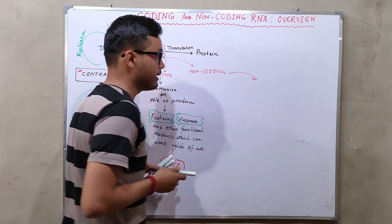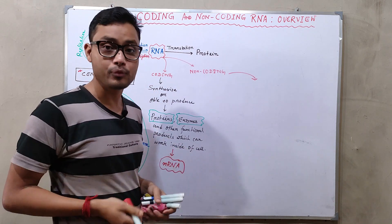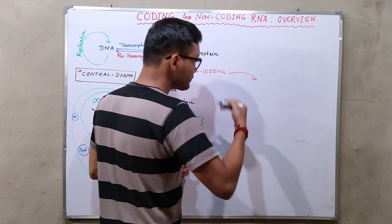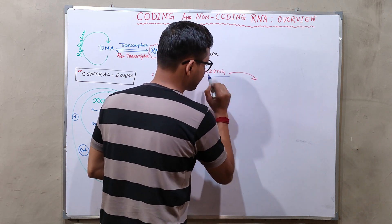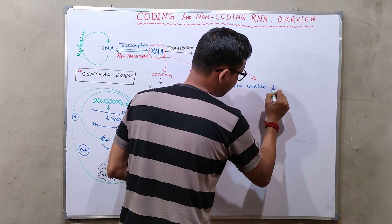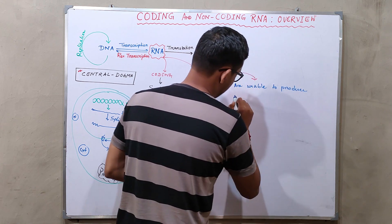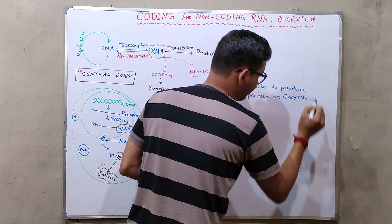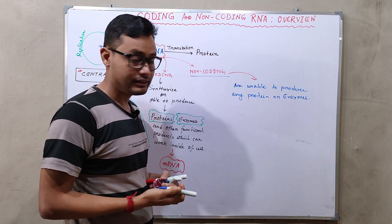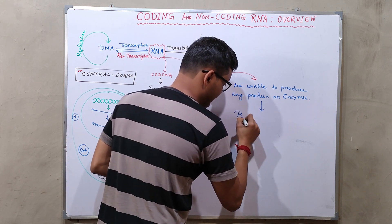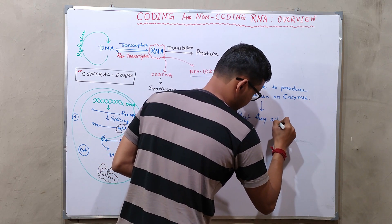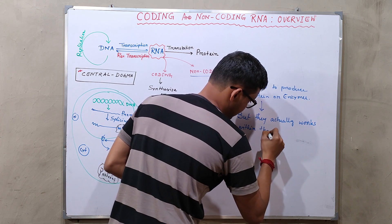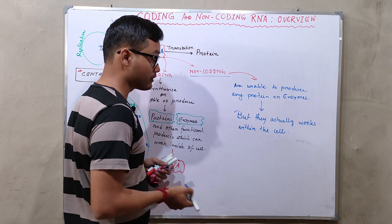Non-coding RNAs are basically those RNAs which cannot synthesize or are unable to produce any functional product like proteins or enzymes, but they work in the cell in various manners. These RNAs are unable to produce any protein or enzymes, but they are actually needed for the cell to survive and work within the cell.